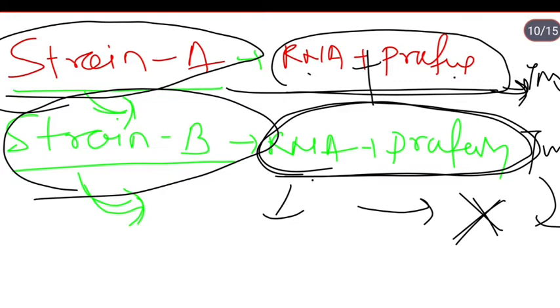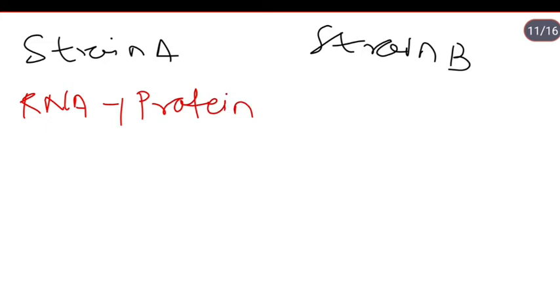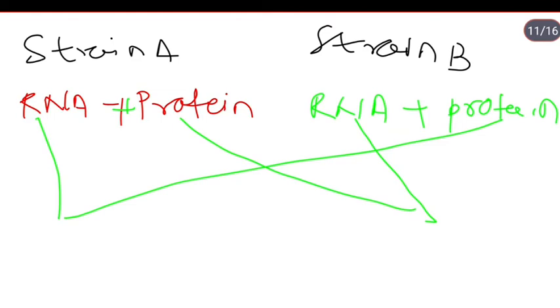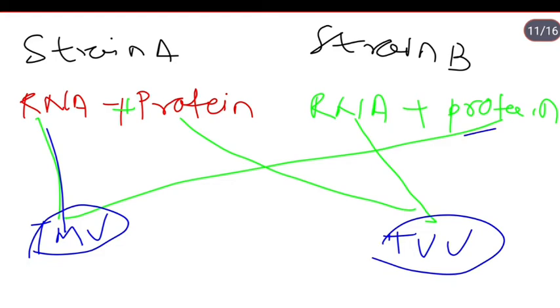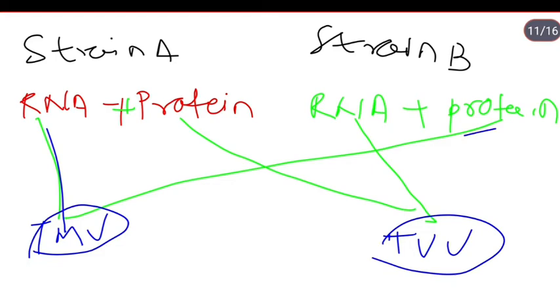In the next step, they created hybrid TMV particles. They took Strain A RNA and combined it with Strain B protein to create a hybrid virus. Conversely, they took Strain B RNA and combined it with Strain A protein. Then they infected plants with these hybrid viruses to see which component determines the symptoms.